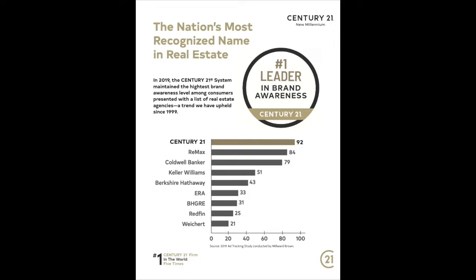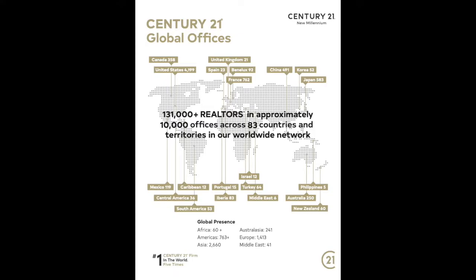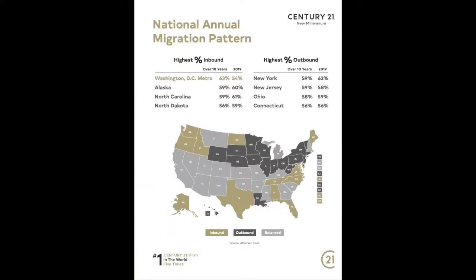Century 21 is the most recognized name in real estate. When I talk to people about the company that I work for, I don't have to tell them what I do for a living — and I think that's really powerful, especially in an age where people use the internet to do their searches and like to work with companies they're familiar with. Not only are we the number one leader in brand awareness in the United States, we also have a global network of offices. We're in a society where people use the internet to find homes before they even talk to an agent, and over 50% of the people moving to the Washington, D.C. area are considered long-distance movers — which underscores how important it is to be with a company that has name recognition the way Century 21 does.